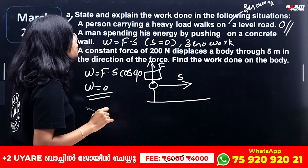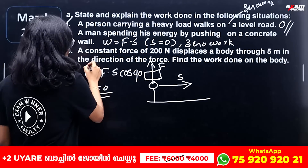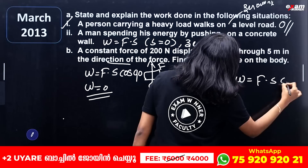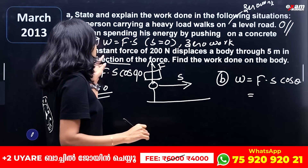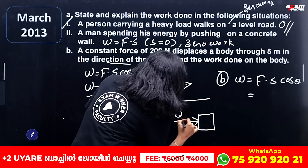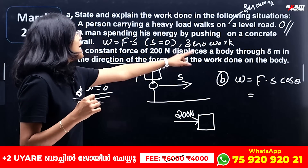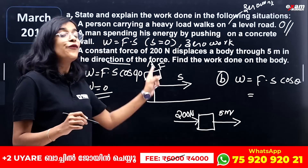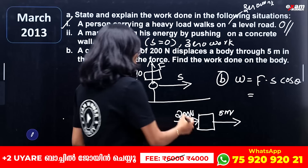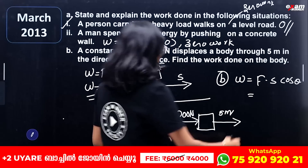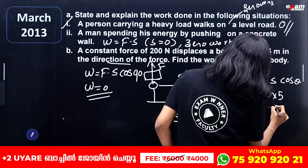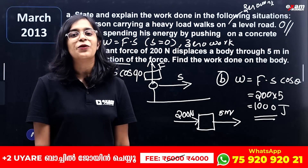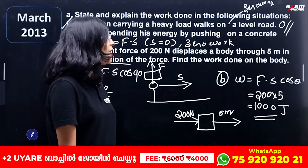A constant force of 200 Newton displaces a body through 5 meters in the direction of the force. Find the work done. Using W = F × S × cos θ: since force and displacement are in the same direction, θ = 0°. So W = 200 × 5 × cos 0° = 200 × 5 × 1 = 1000 J. The formula is W = F dot S = F × S × cos θ.